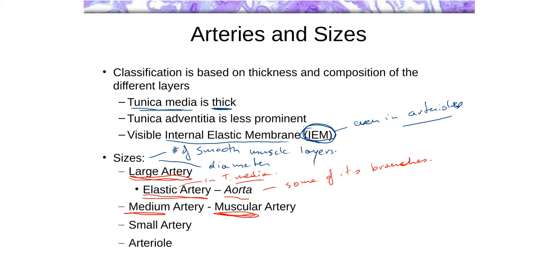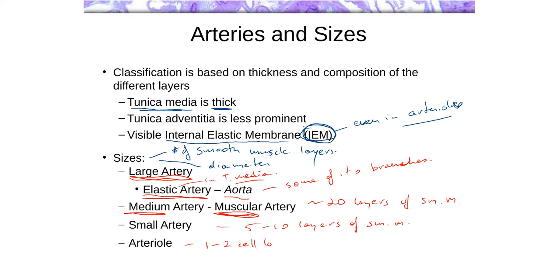In terms of layering, you're looking at probably about 20 layers of smooth muscle in a large artery. If you're looking at an artery without any elastic fibers but with about 10 to 20 layers of smooth muscle, you're looking at a medium-sized artery. Once you get to an artery with something like 5 to 10 layers of smooth muscle, you're looking at a small artery. By the time you get to an arteriole, the tunica media is really composed of maybe 1 to 2 cell layers.